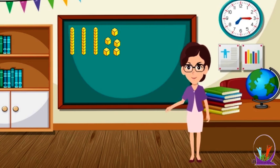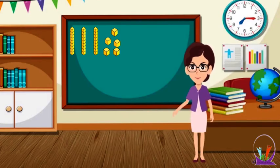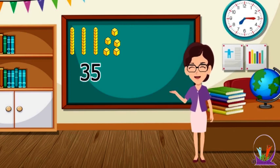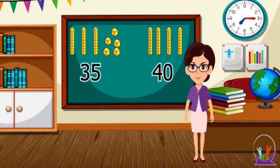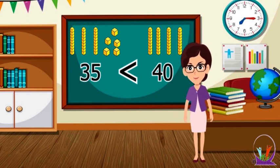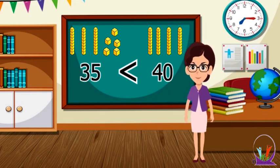Here, there are three tens and five ones, which means 35. And here, there are four tens, which means 40. So 40 is greater than 35.